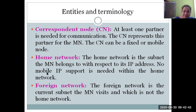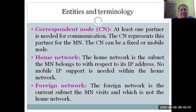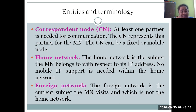The Correspondent Node (CN) is the communication partner of the mobile node — at least one partner is needed for communication. The correspondent node may be fixed or mobile itself. It is the receiving party or the other subscribing party communicating with our mobile node, and there may be many correspondent nodes in a network.